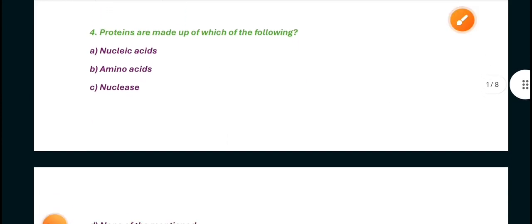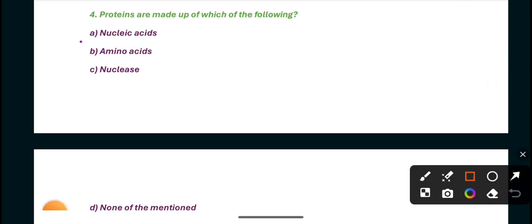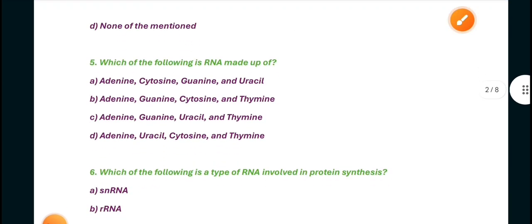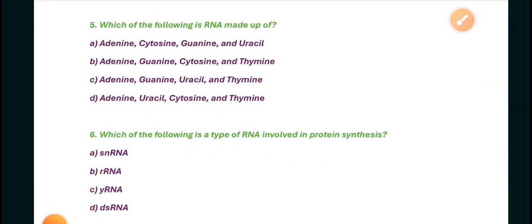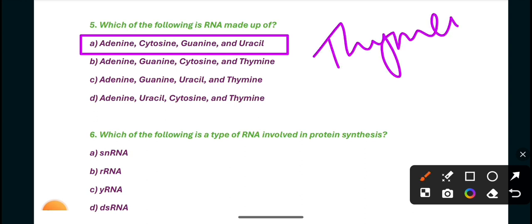Question four: Proteins are made up of the following. Answer is B, amino acids. Proteins are made up of 20 different kinds of amino acids. Next is which of the following is RNA made up of? RNA is made up of adenine, cytosine, guanine, and uracil. This is answer A. In DNA, at the place of uracil, thymine is present.